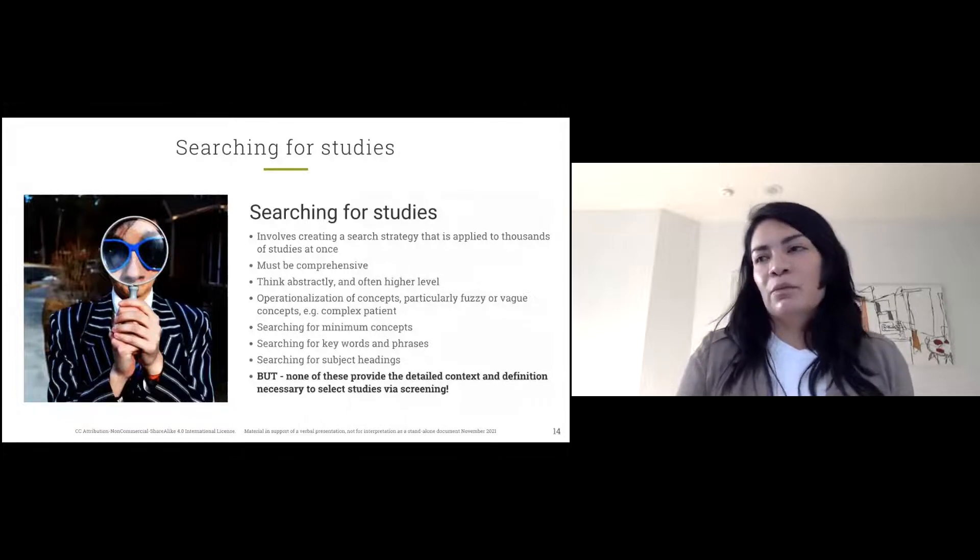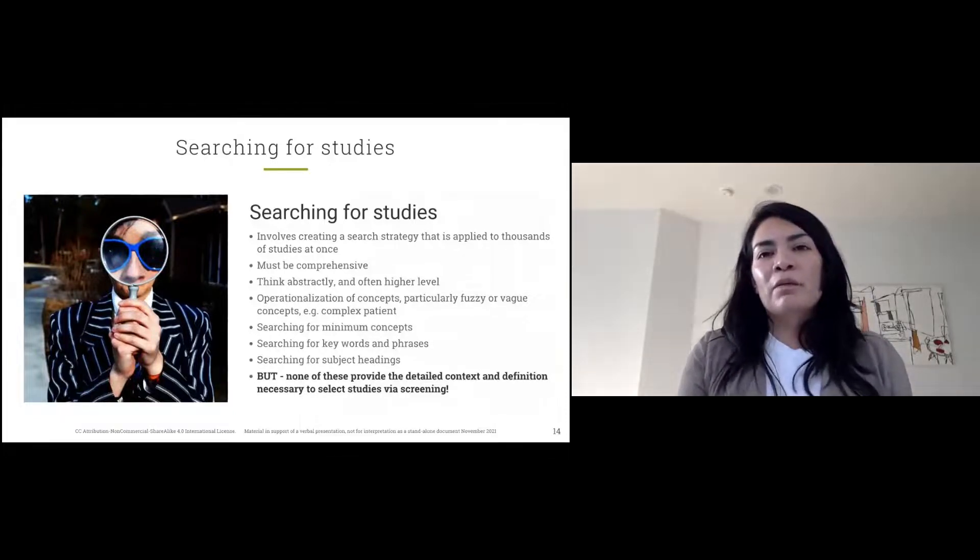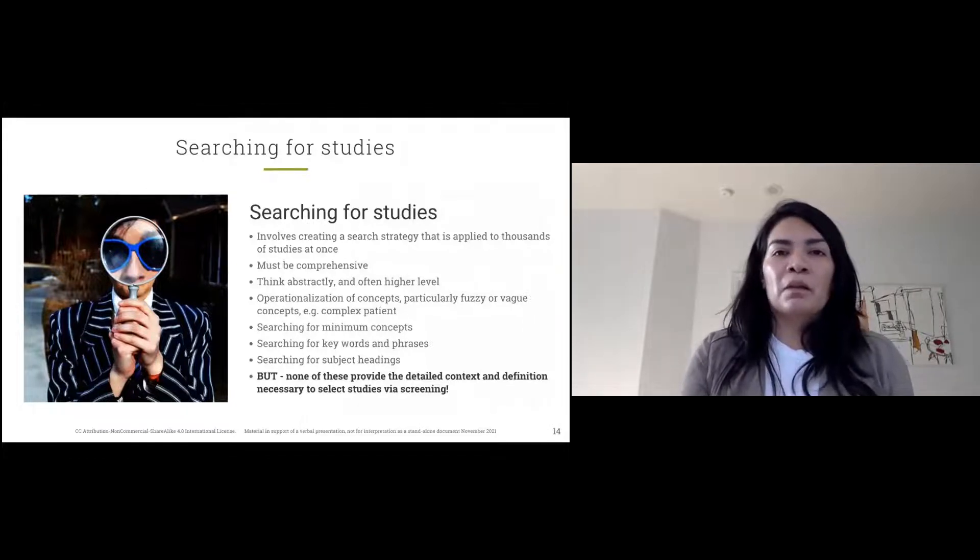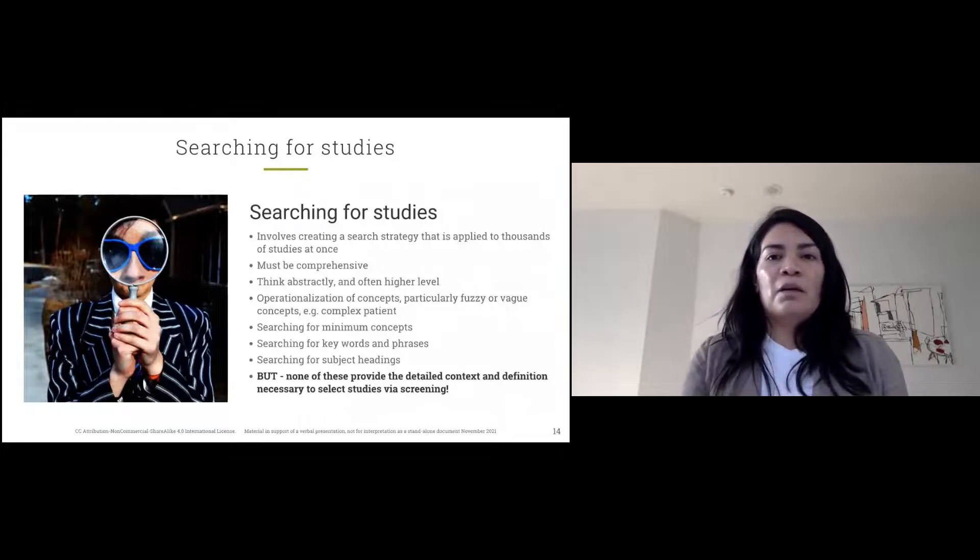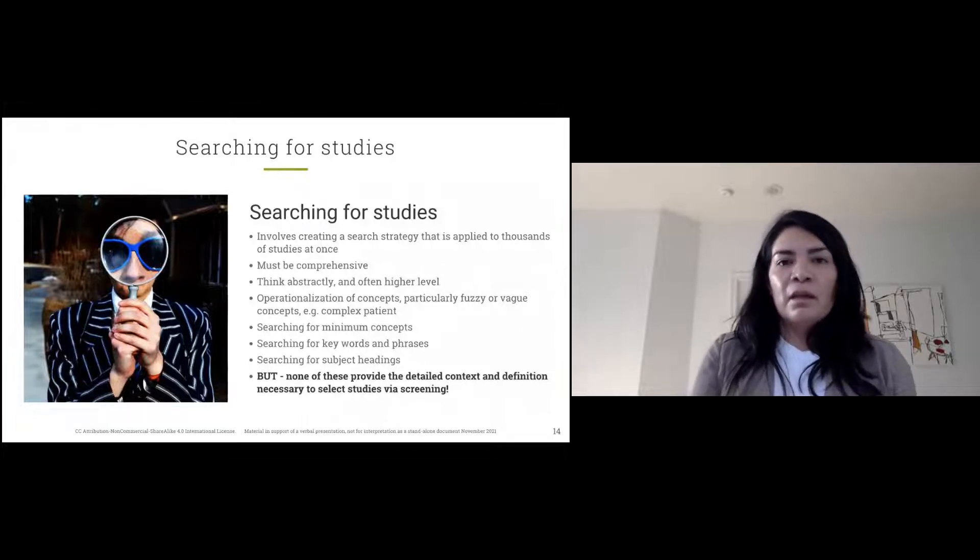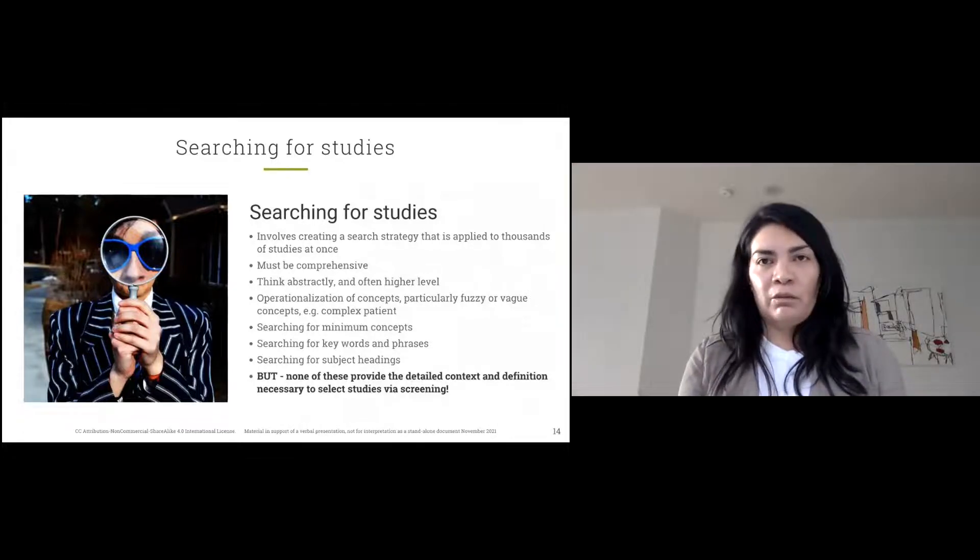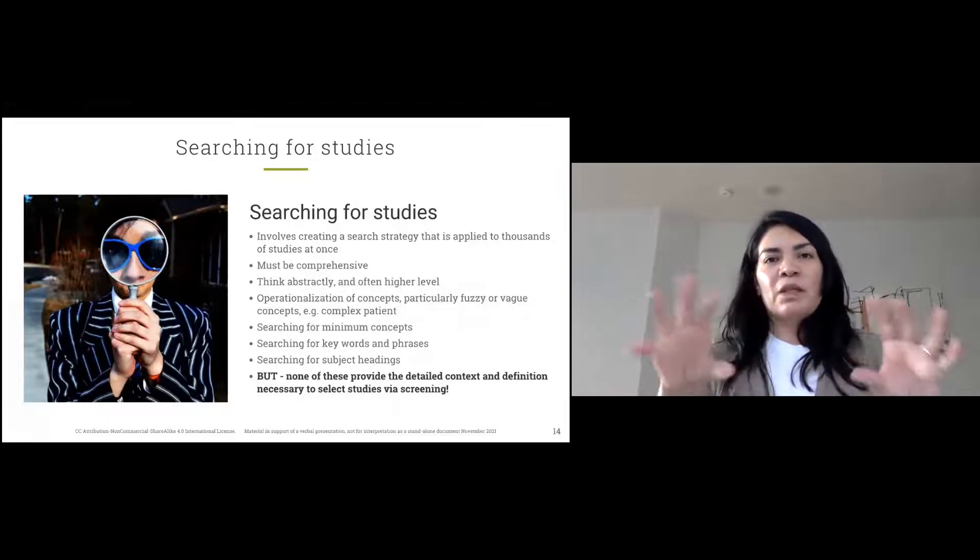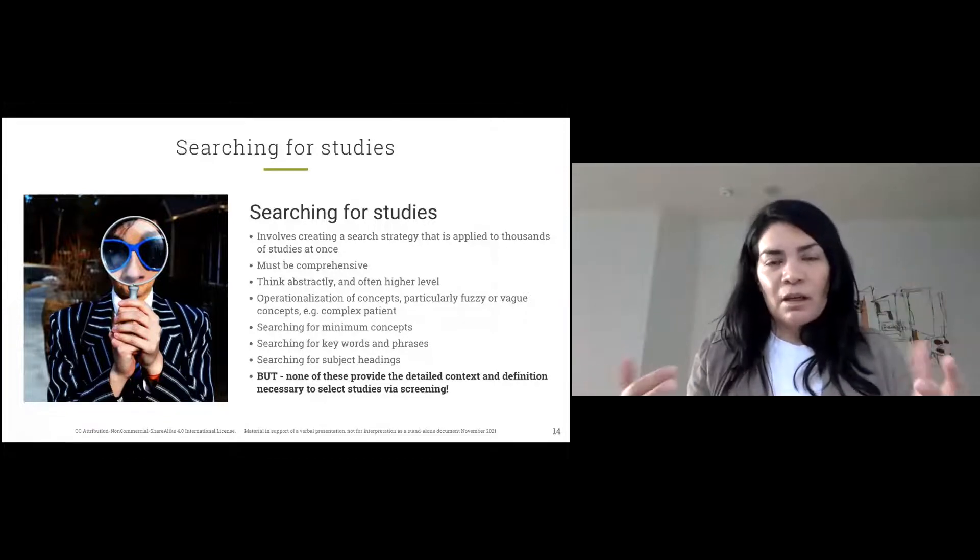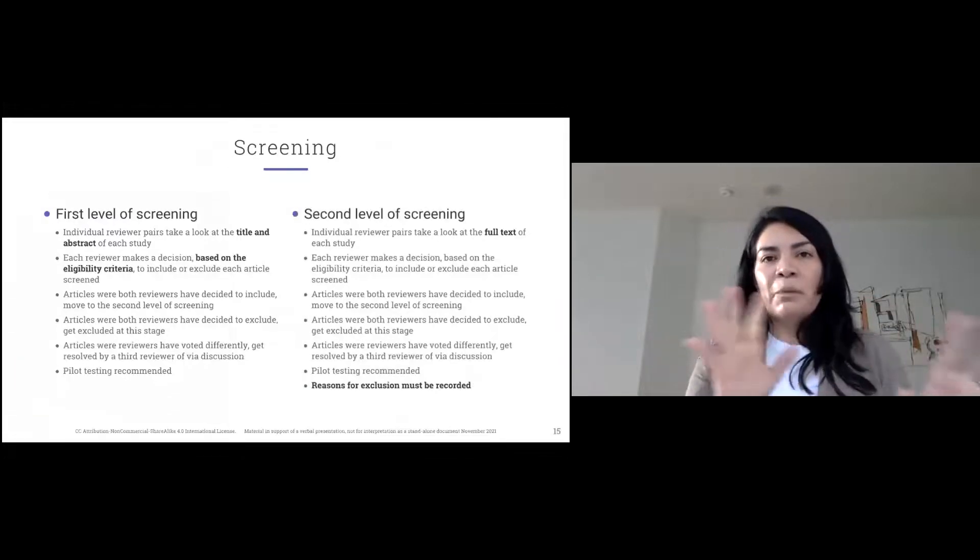So, searching for studies, this is when you consult with your liaison librarians, it involves creating a search strategy. If you're doing it yourself, remember that the goal is to be very sensitive. It must be comprehensive. You have to think abstractly and at a higher level. You try to search for minimum concepts. You search using keywords and phrases, subject headings, depending if the database has controlled vocabulary.